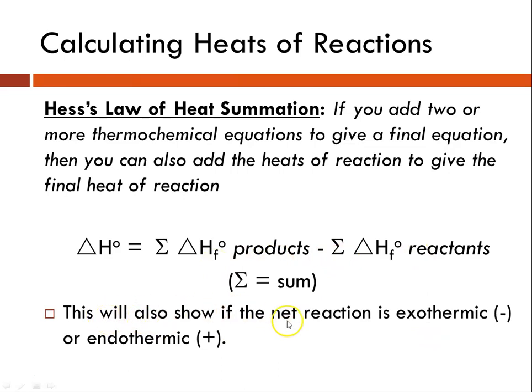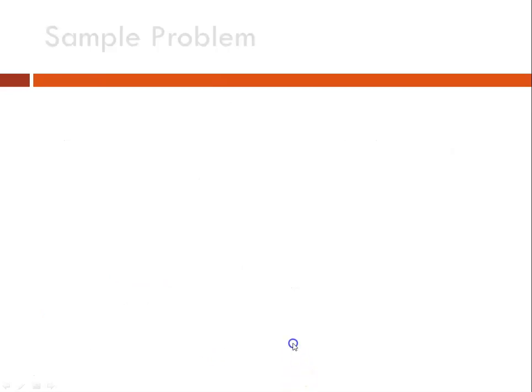This will also show whether the net reaction is exothermic or endothermic. So if your delta H ends up negative, it's exothermic. If your delta H ends up as positive, it is endothermic.